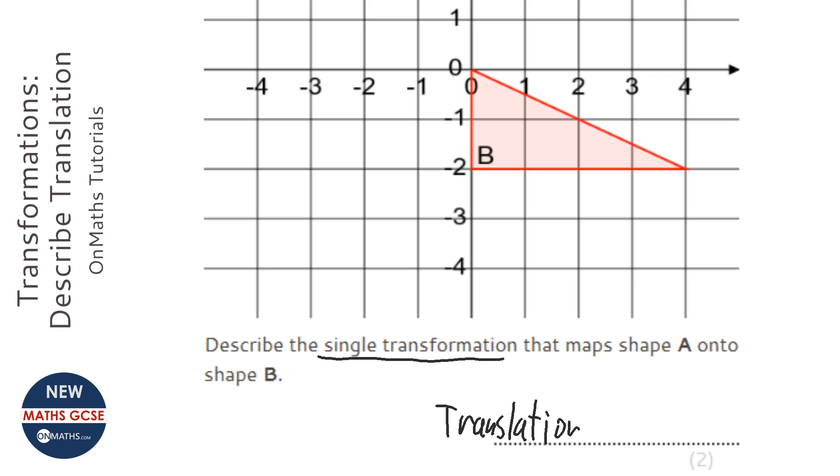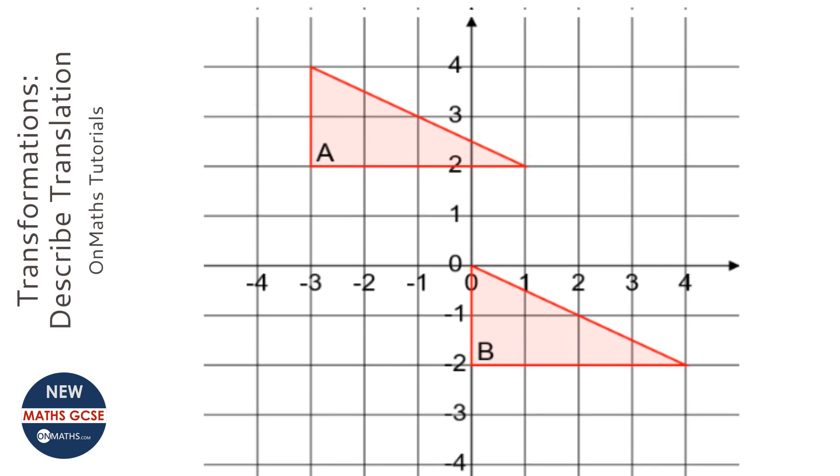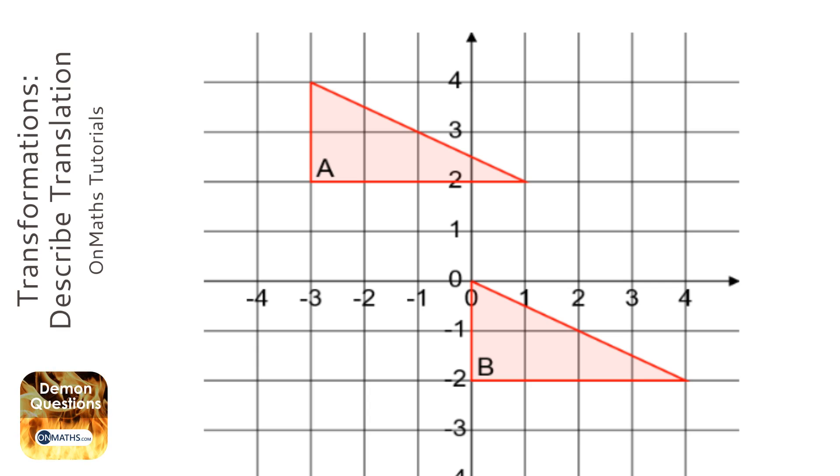Now we need to figure out what the translation is. Always pick the same point on both shapes. I always pick the top left one. Just make sure it's the same, doesn't matter which one you pick. So I'm going to pick the top left one on both shapes. I'm going to start at A and try to get to B by using jumps, so I'm going to start off going right first.